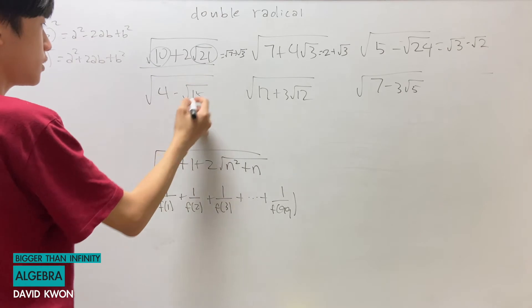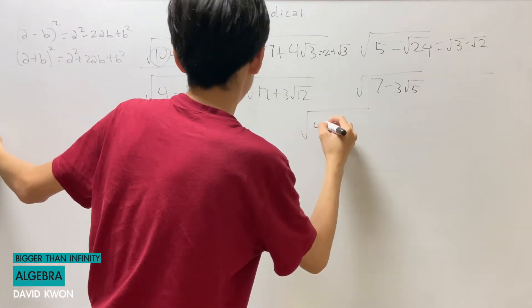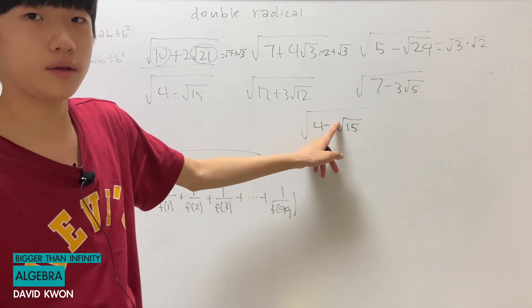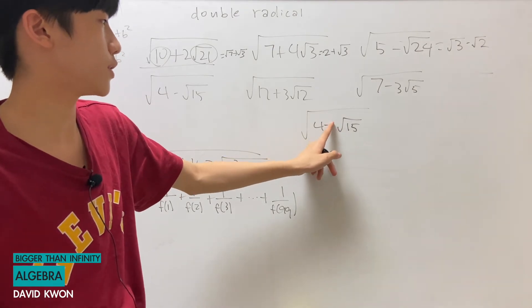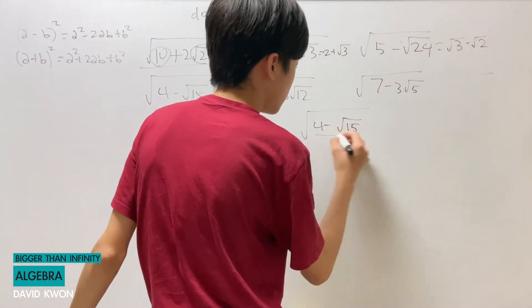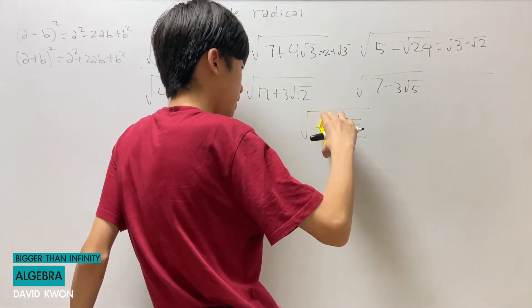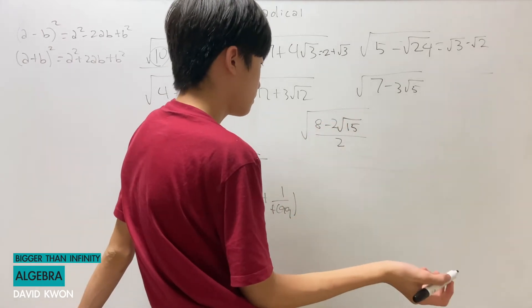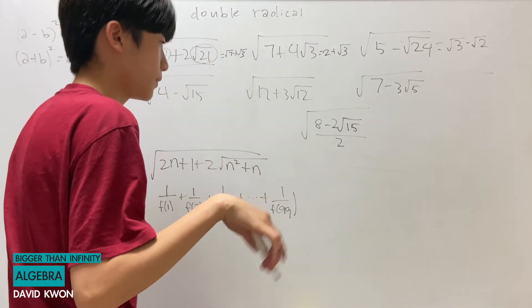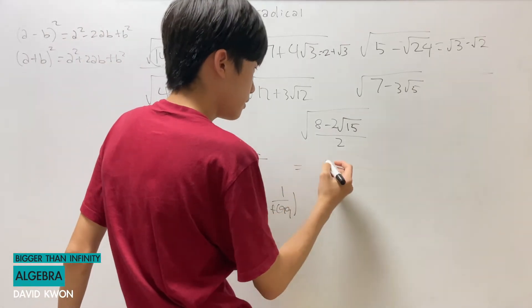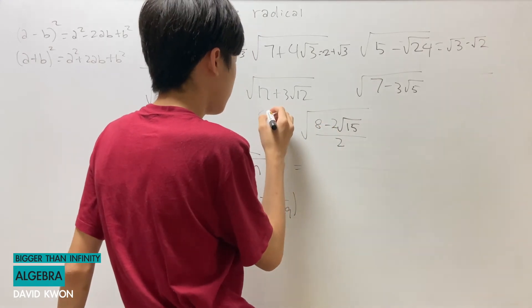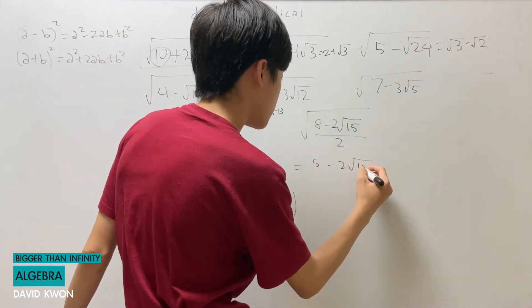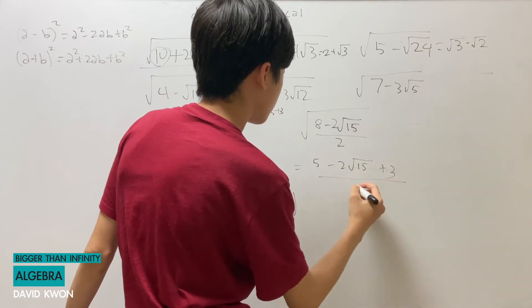To solve this next question, we can't make it have the 2 up here even if we force it. So I'm going to divide by 2 and multiply by 2 on the top, as if I didn't do anything. Now I think you can see a little bit of a pattern. That is equal to 8, which I will break apart into 5 plus 3. So it is 5 minus 2 times square root of 15 plus 3, all over 2.